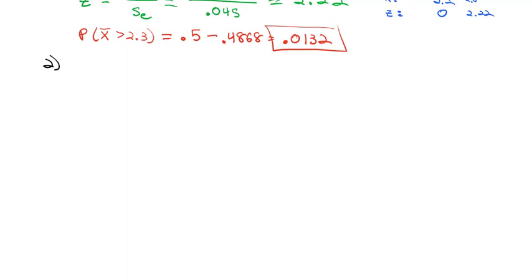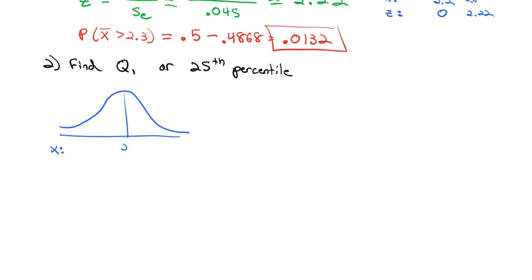Let's keep with this example one more. I also want to see if we can find Q1 or the 25th percentile. Same problem with the cell phones where we've got these x values. The mean x value is 2.2 gigs. We want to find the x value where 25% or 0.25 is in that first tail.